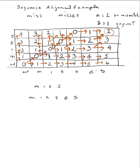I've reproduced our matrix that we created by doing the dynamic programming sequence alignment between 'miss' and 'misses', and now it's time to interpret what we have here. We see our optimum cost is for an alignment that gives us a cost of 2 right here.